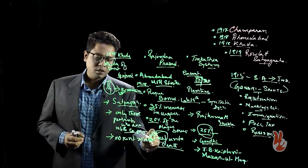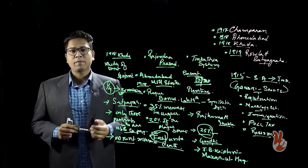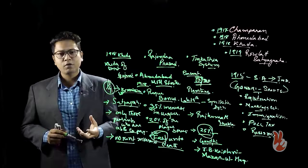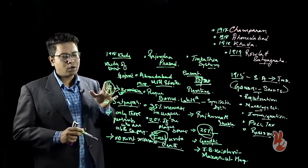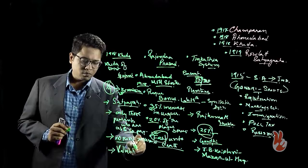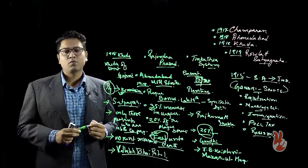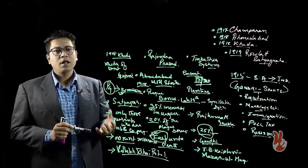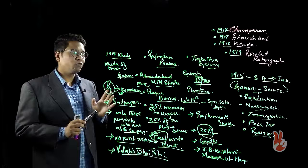In Kheda, a no-rent movement was used as a political tool — the non-payment of rent or taxes to the government was deployed as leverage. Although the government did not publicly relent, a secret order was passed whereby officials were instructed that only those peasants who were able to pay should pay taxes for that particular year. Importantly, during the Kheda movement, Vallabhbhai Patel was for the first time exposed to the Gandhian form of Satyagraha, and from this movement Vallabhbhai Patel became an associate of Mahatma Gandhi.